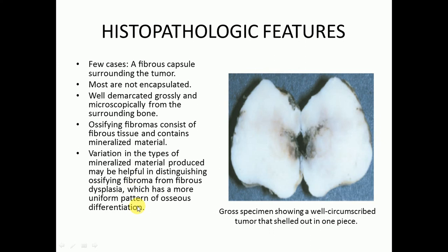In fibrous dysplasia the osseous pattern is much more uniform — this is the key differentiating point. Here you can see a gross specimen showing a well-circumscribed tumor that shelled out in one piece.